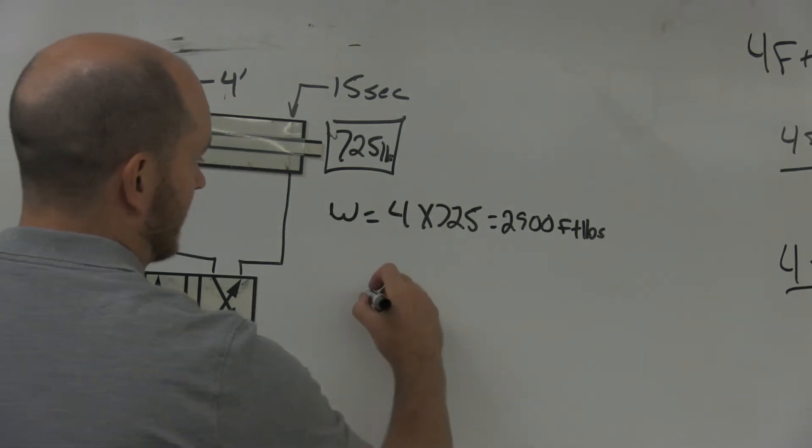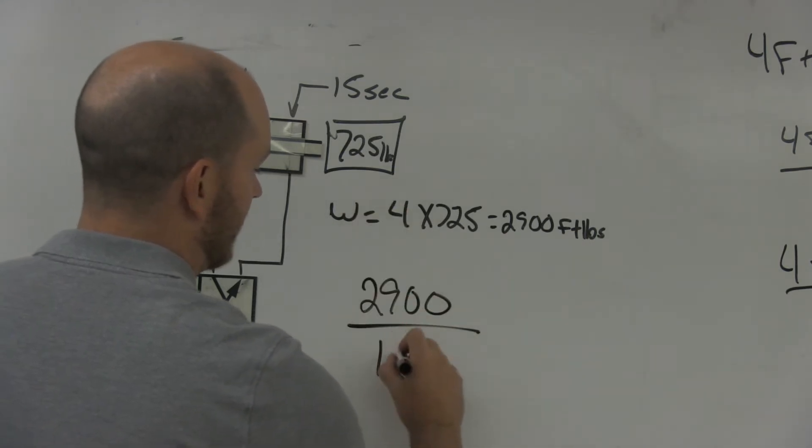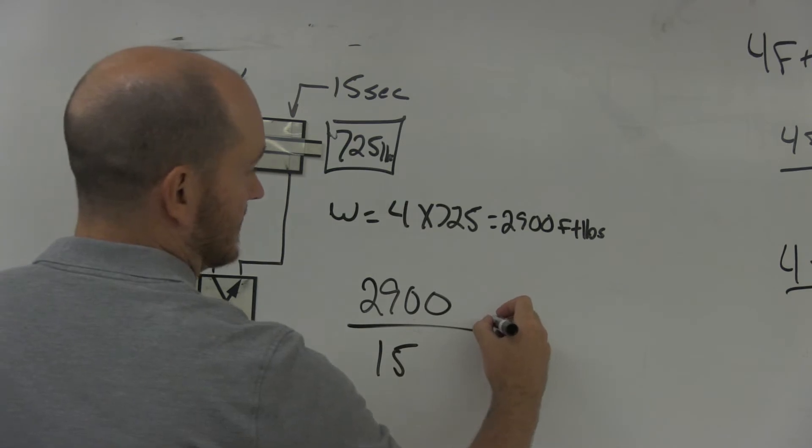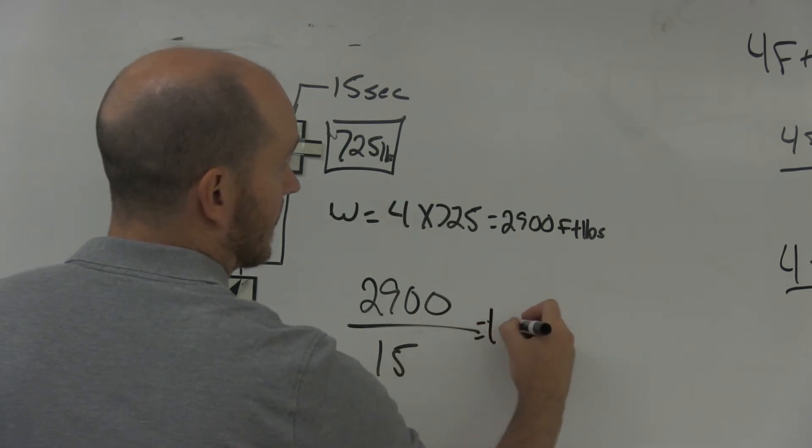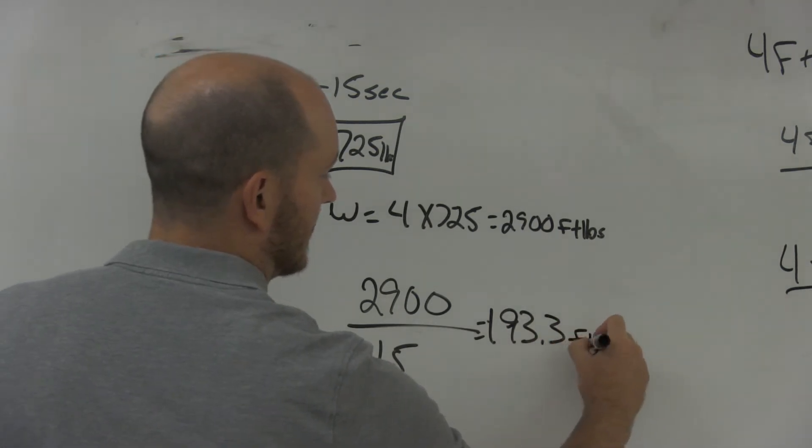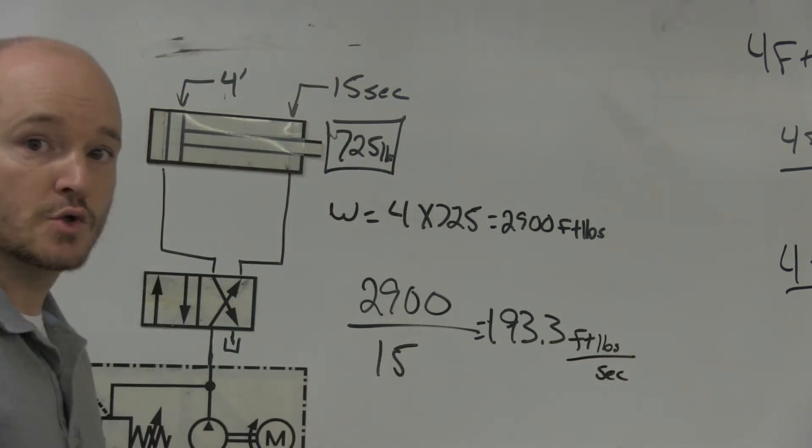So I'll take that 2,900 and divide it by 15, which gives me an answer of 193.3 repeating, and this would be foot-pounds per second.